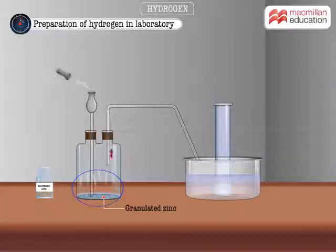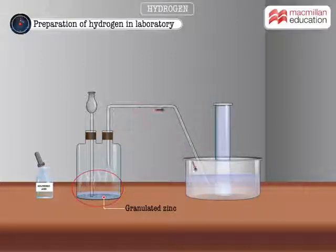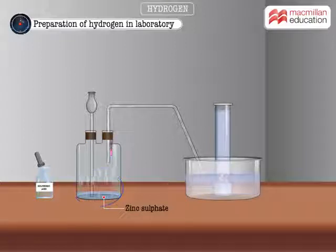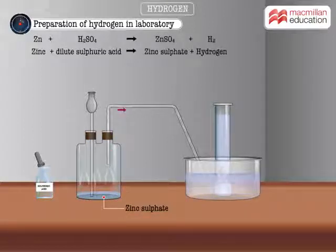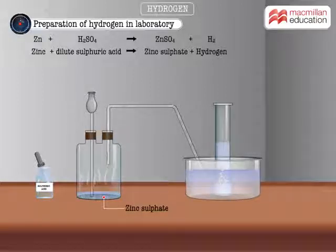Observe the brisk effervescence. This is because zinc displaces hydrogen from the sulphuric acid, leaving behind a solution of zinc sulphate. Watch how hydrogen gas bubbles through water, displacing it downwards through the beehive shelf and into the trough. Interesting?